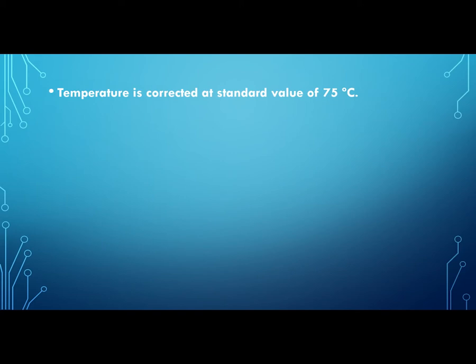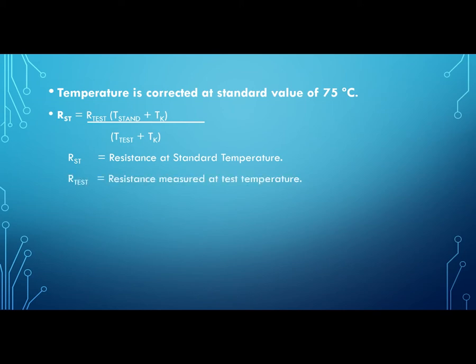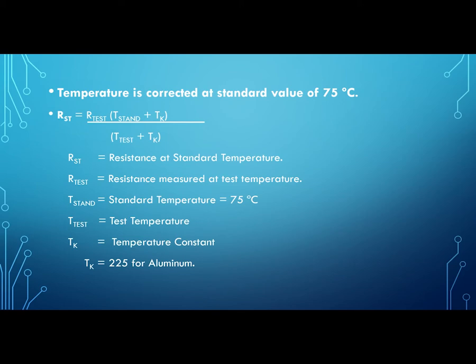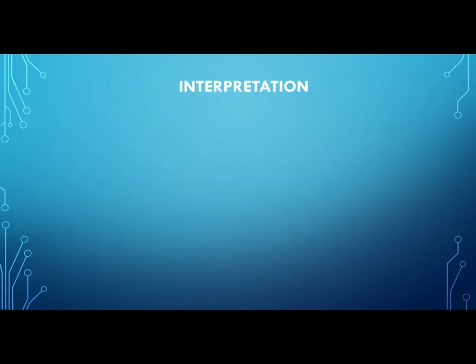Here R_st is the final resistance value at standard temperature of 75 degrees Celsius. R_test is the resistance obtained from the test at a particular temperature. T_standard is the standard temperature which is 75 degrees Celsius. T_test is the temperature at which the test is being conducted. T_K is temperature constant which depends on the material being used. T_K is equal to 225 for aluminum, whereas it is 234.5 for copper.